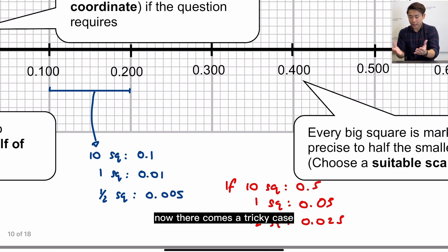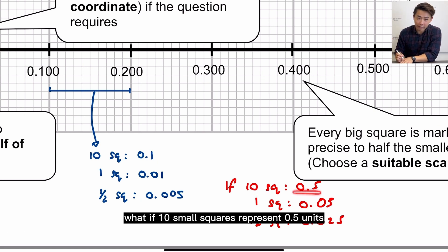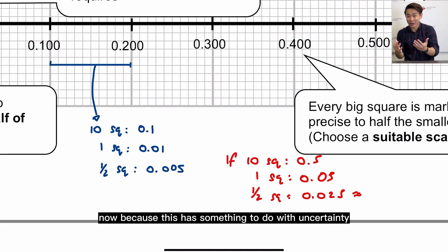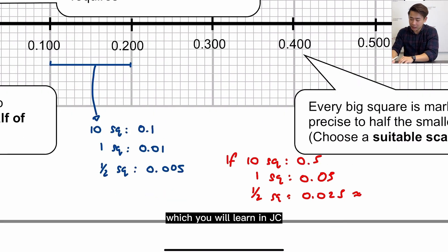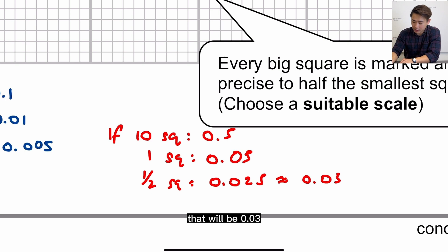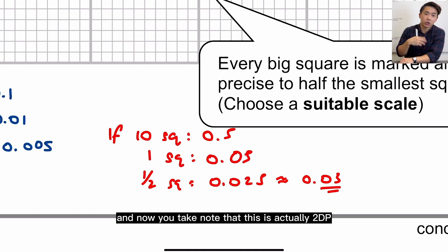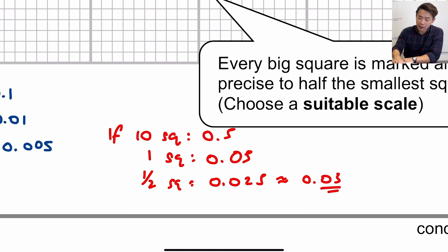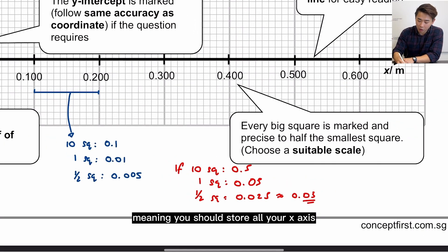Now there comes a tricky case. What if 10 small squares represents 0.5 units? Then one square will be 0.05, and then half square will be 0.025. Now because this has something to do with uncertainty which you will learn in JC, you should convert the precision of half the smallest square to just 1sf. That will be 0.03, and now you take note that this is actually 2dp, meaning you should store all your x-axis value to 2dp if 10 squares represent 0.5.